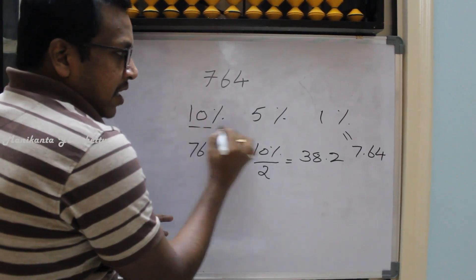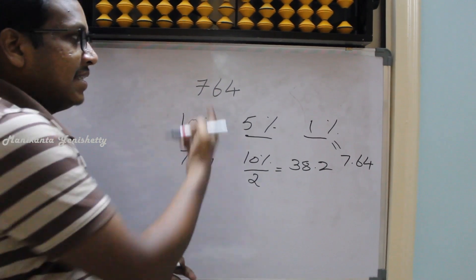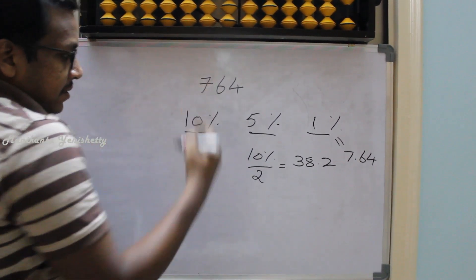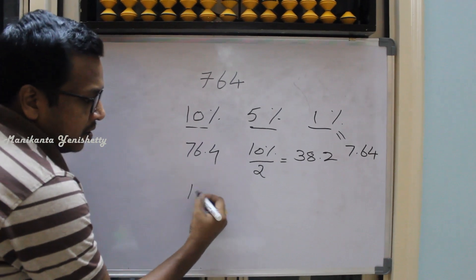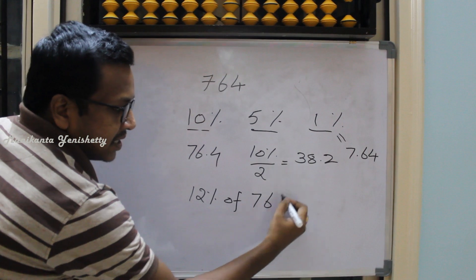If you know these three things - 10%, 5%, and 1% - then we can find any number easily the percentages. For this, I am going to find 12% of 764.